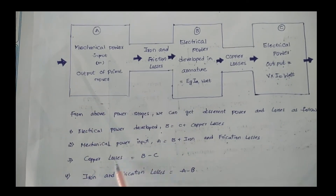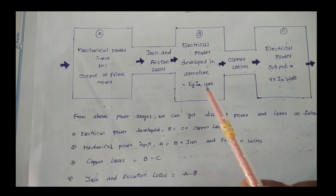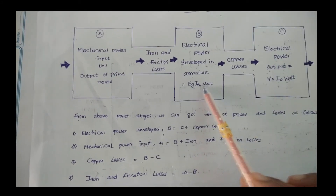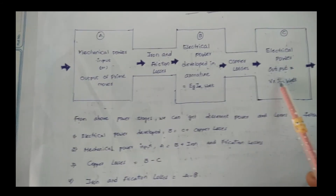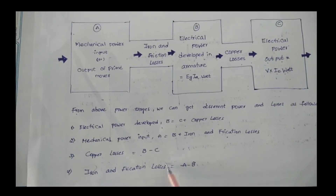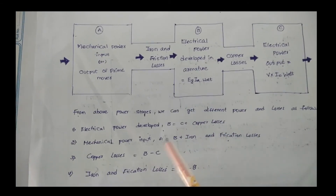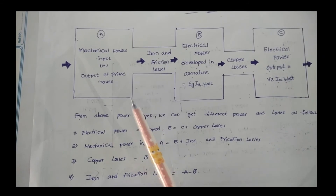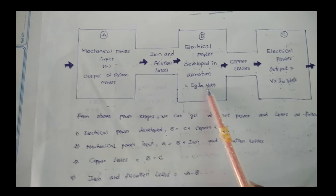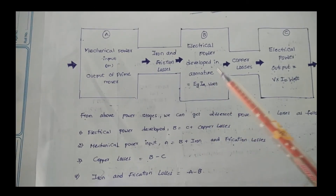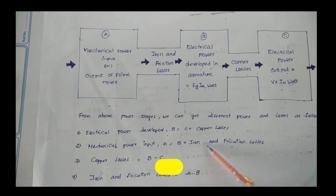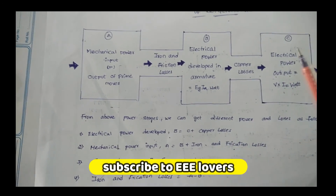The copper losses can be found by subtracting the electrical power output from the electrical power developed in the armature. Similarly, the iron and friction losses equal the mechanical power input minus the electrical power developed in the armature. I have given a brief overview of the losses in this video.